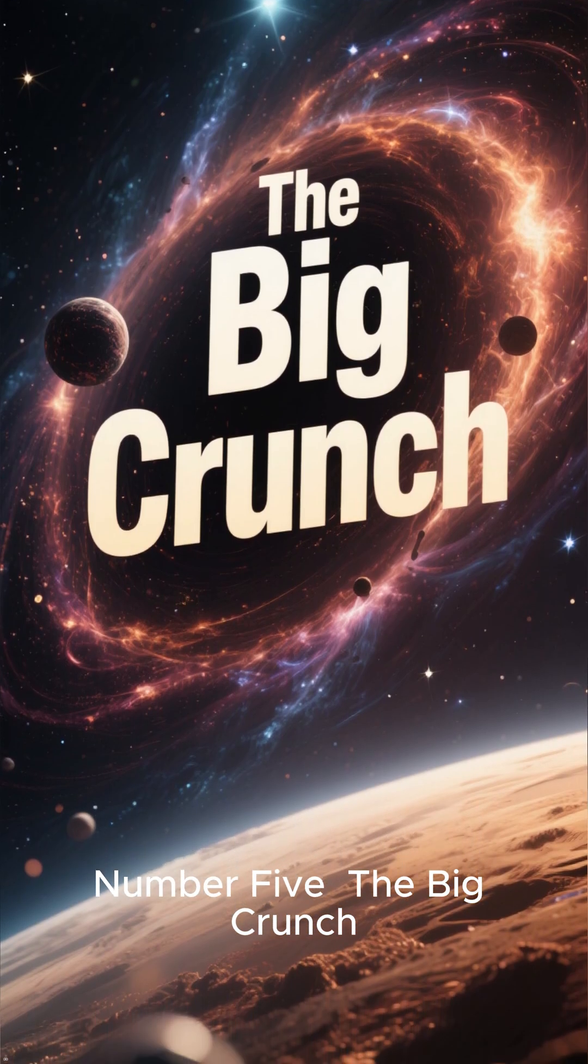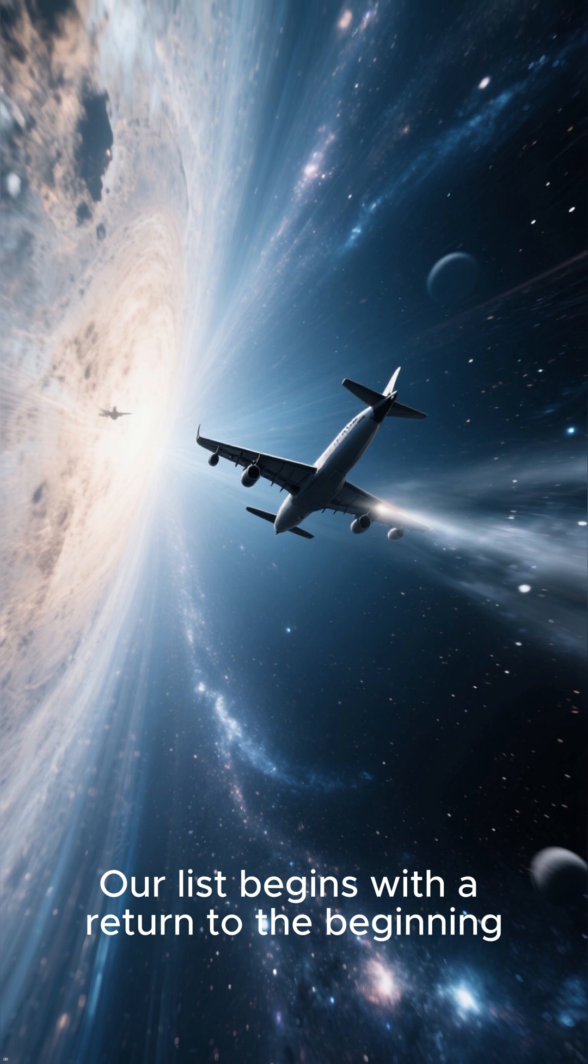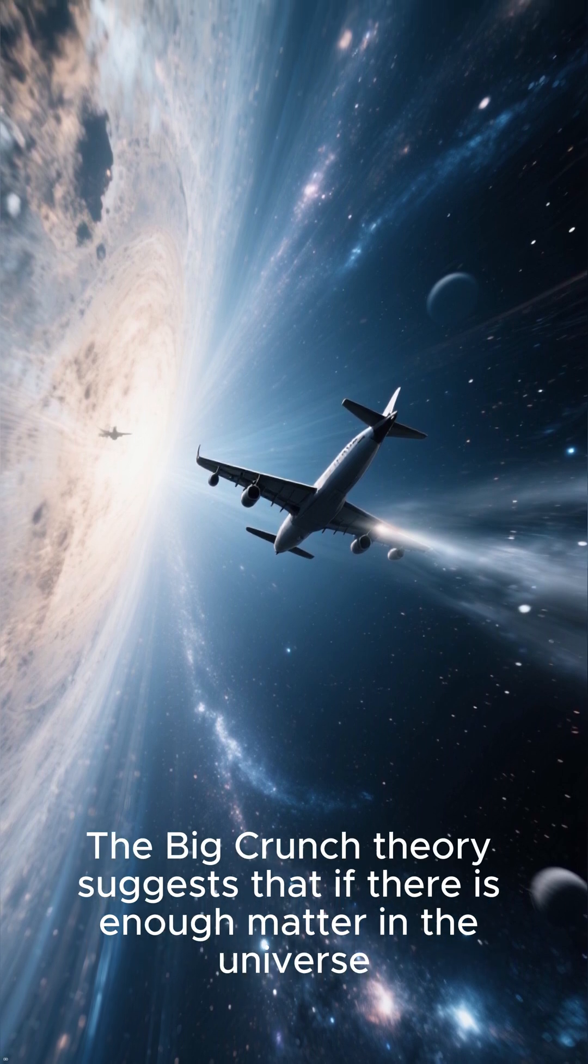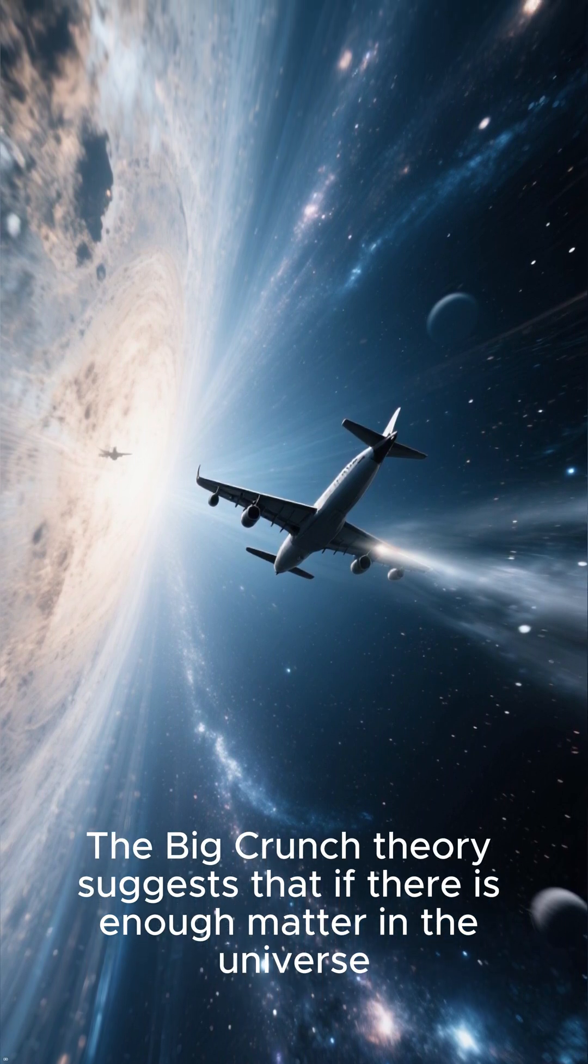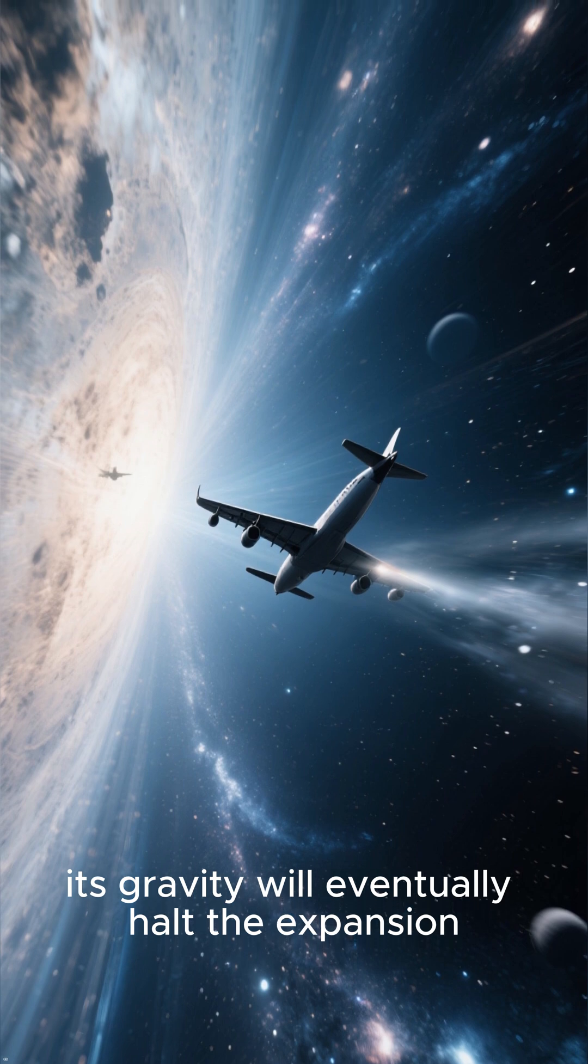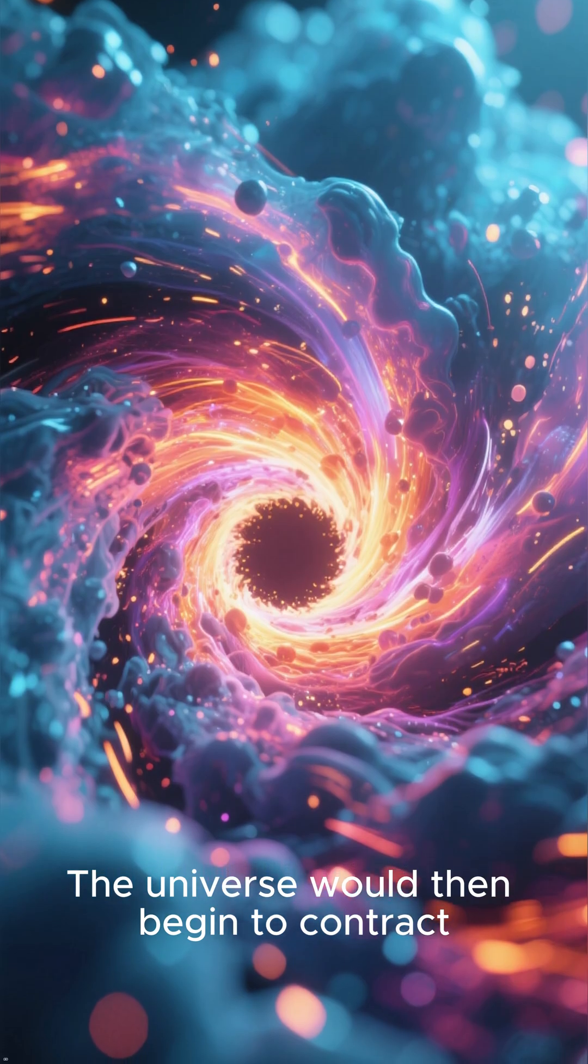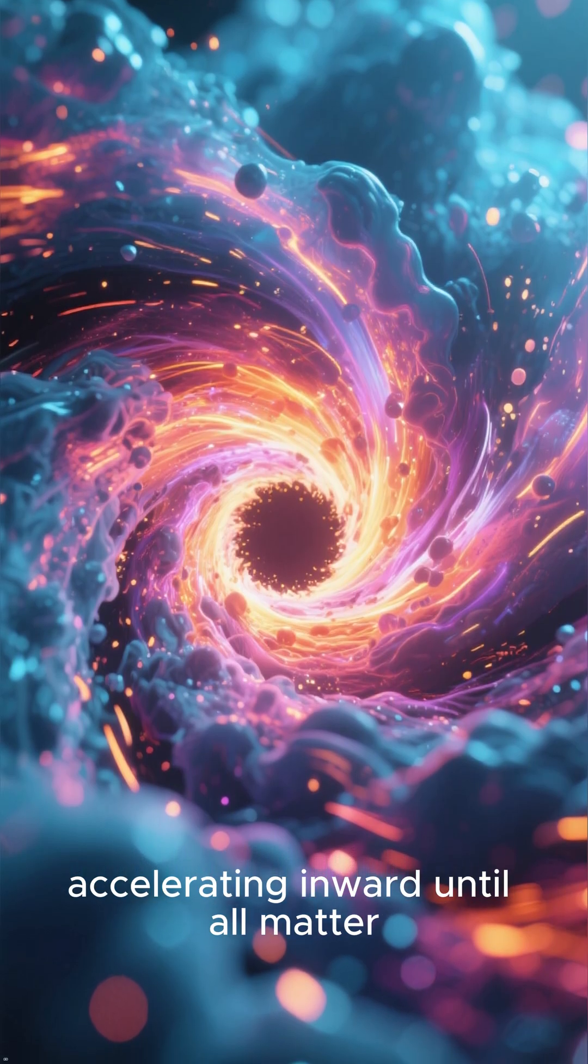Number 5: The Big Crunch. Our list begins with a return to the beginning. The Big Crunch theory suggests that if there is enough matter in the universe, its gravity will eventually halt the expansion. The universe would then begin to contract, accelerating inward until all matter,